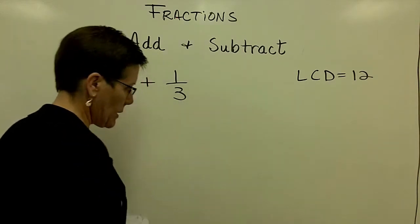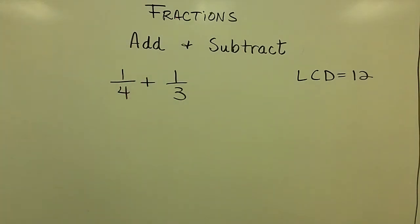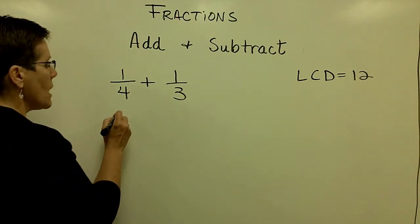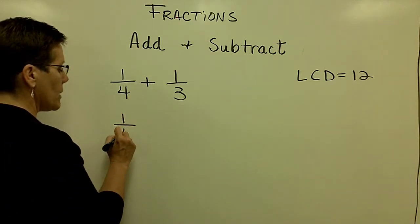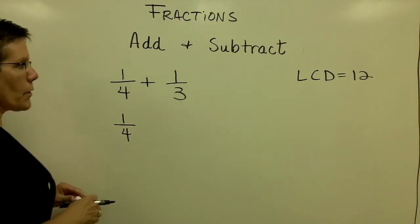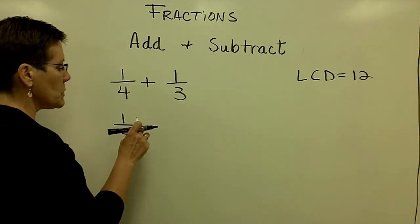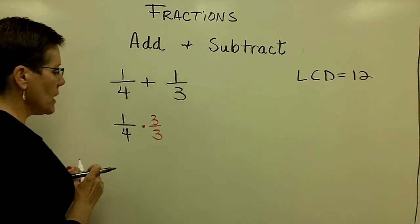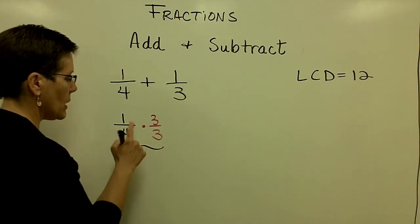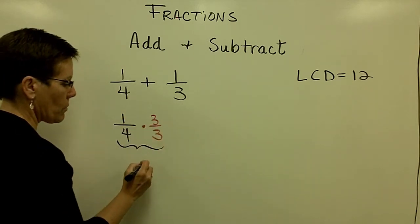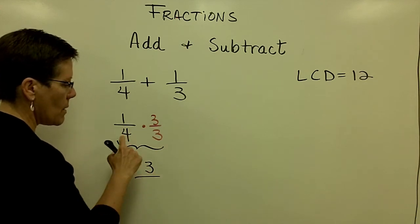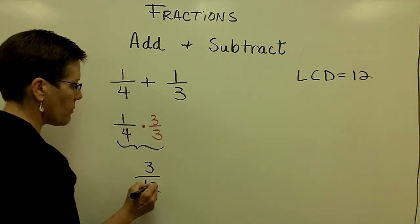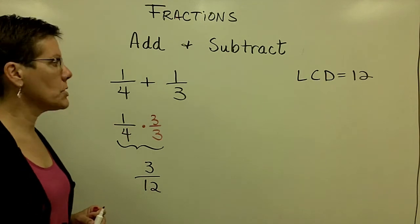What I need to do next is take each of those fractions and multiply them by the number 1. So the fraction 1/4 has to be multiplied by the number 1 in the form of 3 over 3. So that it will become, in the numerator this will be a 3, and in the denominator 4 times 3 is 12. And I have created what's called an equivalent fraction.